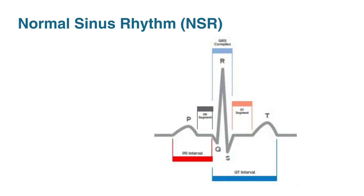The P wave, QRS complex, and T wave together at proper intervals are indicative of normal sinus rhythm, or NSR.